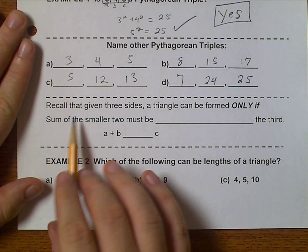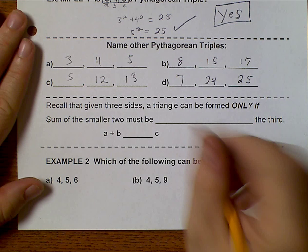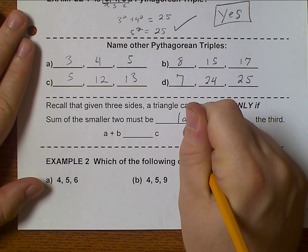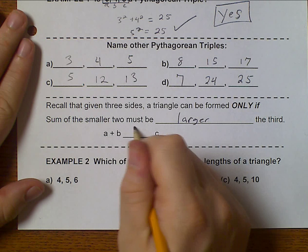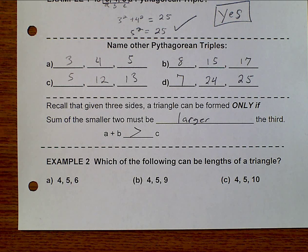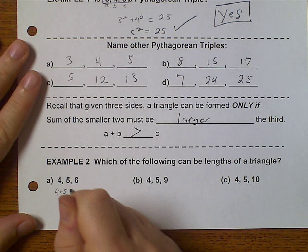Now, I can only make a triangle if the two smaller sides are larger than the third. So a plus b must be greater than c. So let's see. Well, 4 plus 5 equals 9.